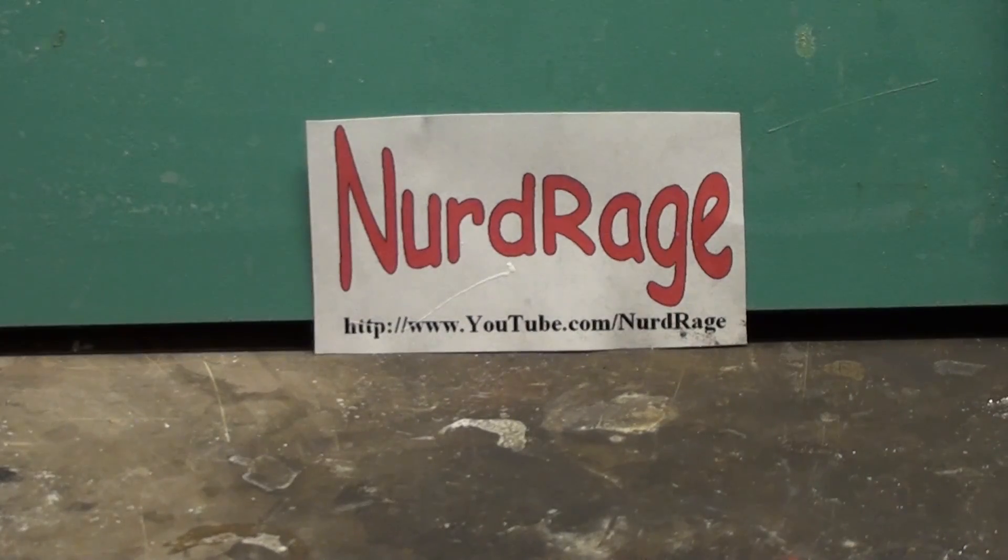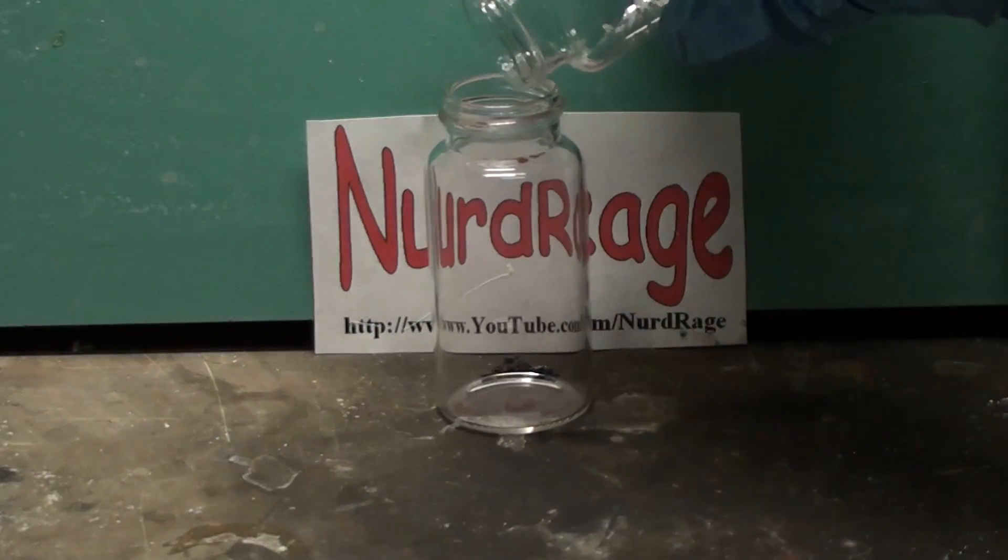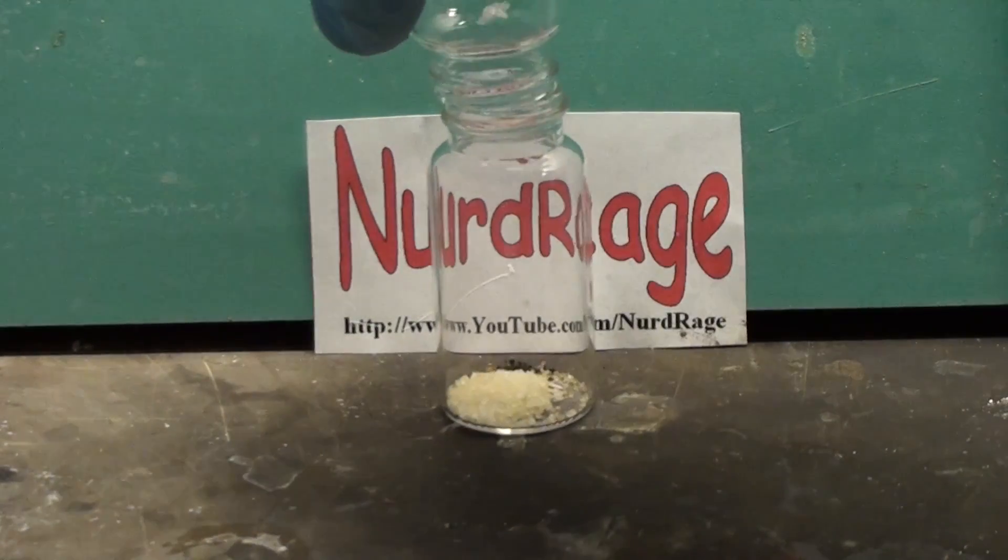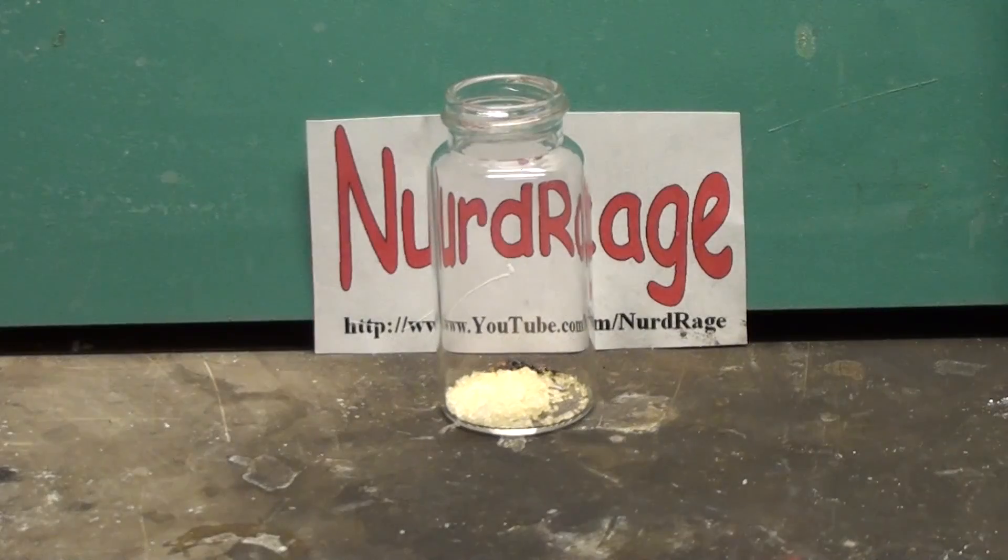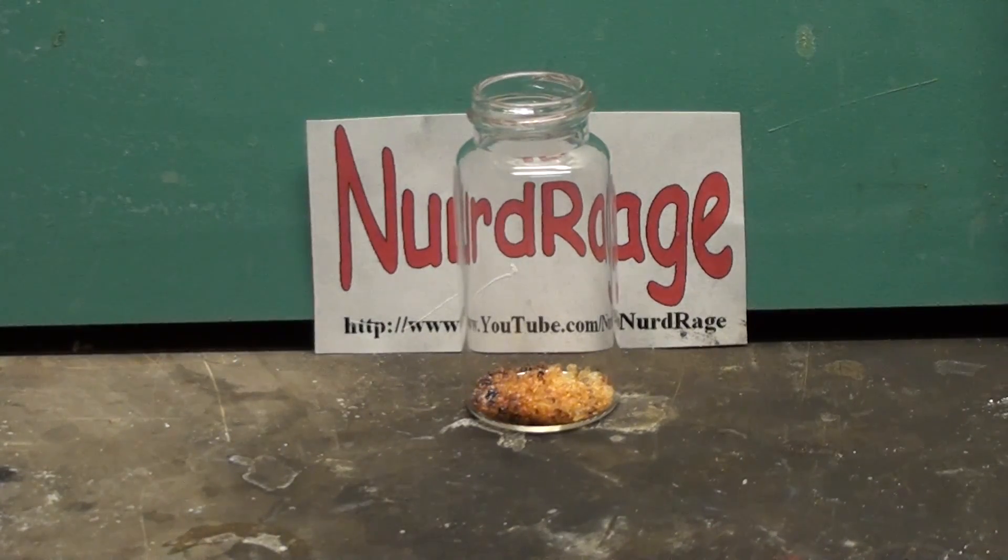Now we need to make the electrolyte solution. First start with 127mg of pure iodine crystals and add to it 830mg of potassium iodide. Already you can see it reacting to form brown potassium triiodide. Add 10mL of anhydrous ethylene glycol and mix until it's dissolved.